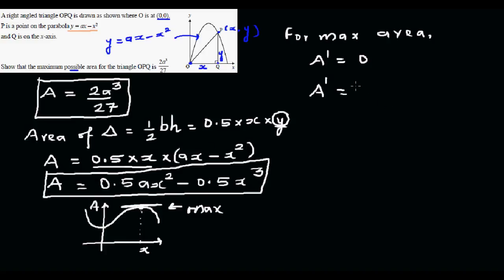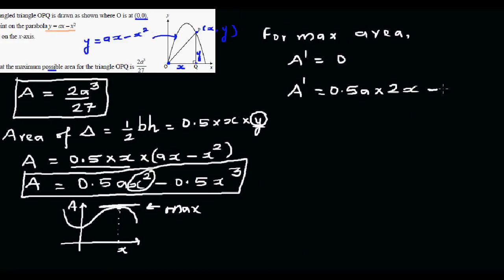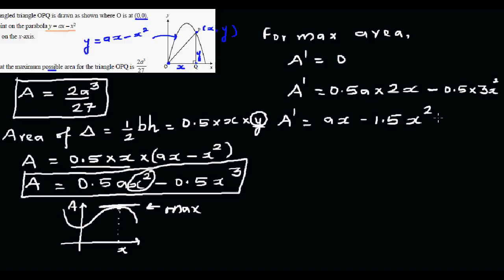Differentiating area equals 0.5AX squared minus 0.5X cubed: A prime equals 0.5A times 2X minus 0.5 times 3X squared, which simplifies to AX minus 1.5X squared. We set this equal to zero.